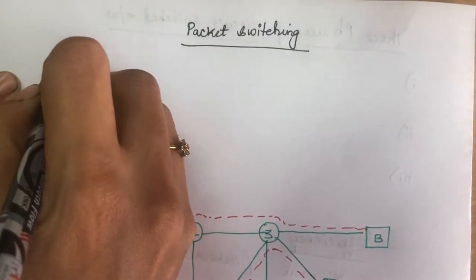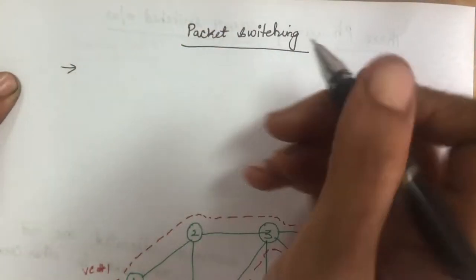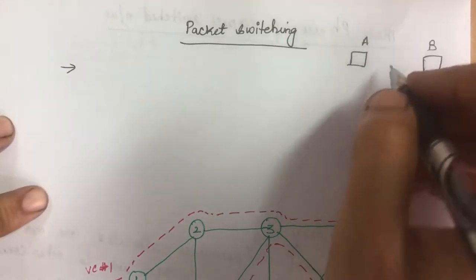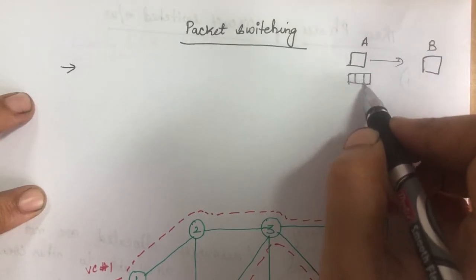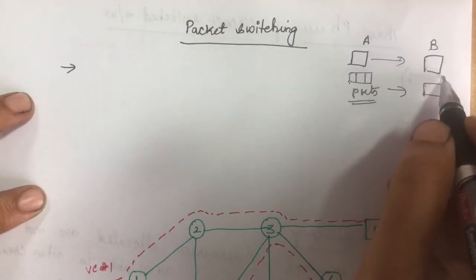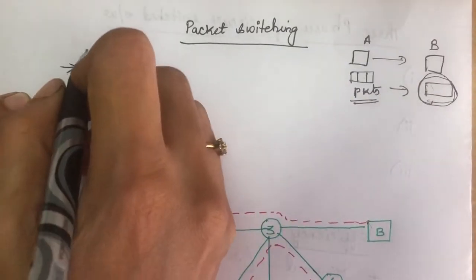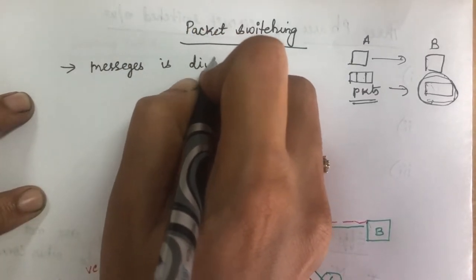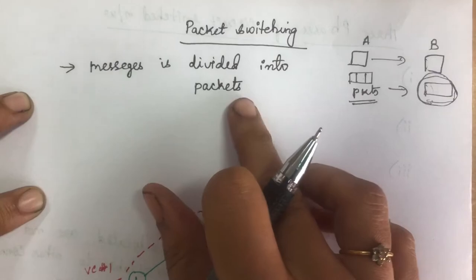In packet switching, when device A wants to communicate with device B, they can use a packet switched network between the data link layer and the network layer for communication. What happens is the message will be divided into packets, the packets will be sent, and at the destination side the packets will be rearranged to recreate the whole message.